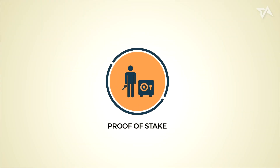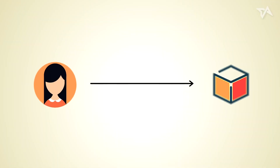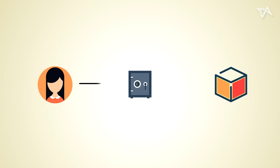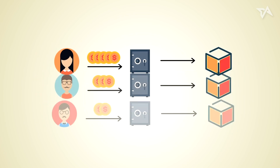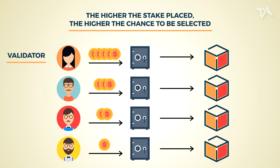Next, we have proof-of-stake. Here, the creator of a new block, also known as a validator, is randomly chosen based on how much stake they commit to the network. The higher the stake placed, the higher the chance to be selected as a validator. Let's apply this to the treasure chest scenario.